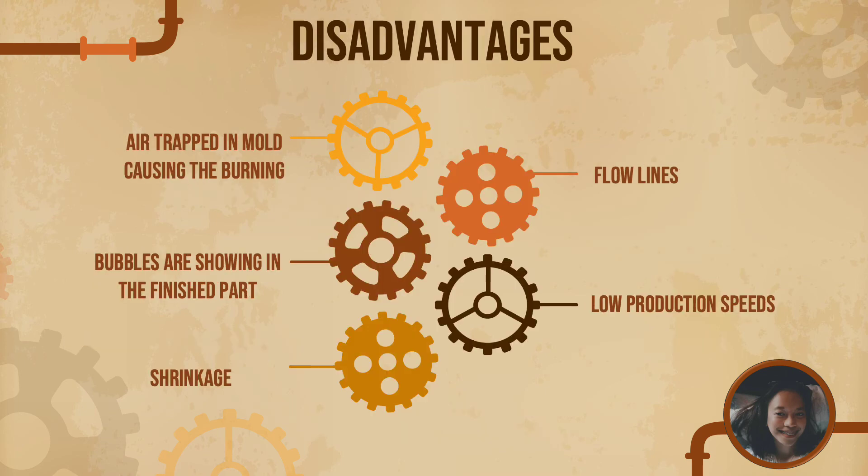Moving on to the disadvantages of structural foam molding: the first disadvantage is air trapped in the mold, causing burning. If the mold is not properly vented, air trapped in the cavity can cause the edge of the part to burn where the improper venting is taking place. The mold should be inspected and venting must be fixed to ensure proper gas release.